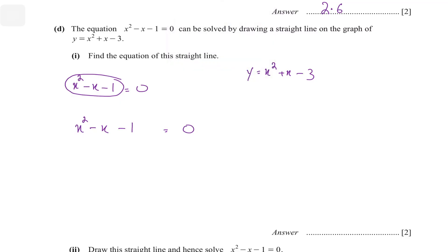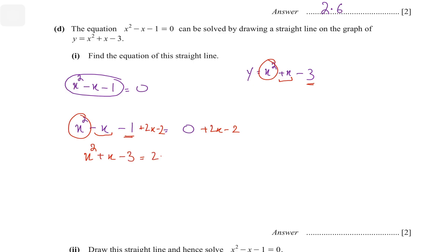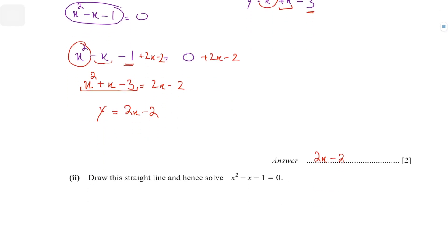Compare the expressions. x squared matches x squared — nothing to add or subtract. The problem is we have plus x here and minus x here, so add 2x to both sides; minus x plus 2x equals x. To bring minus 1 equal to minus 3, subtract 2 from both sides. The left-hand side becomes x squared plus x minus 3 equals 2x minus 2. Replace the left side with y: y equals 2x minus 2. That is the straight line we are going to draw.